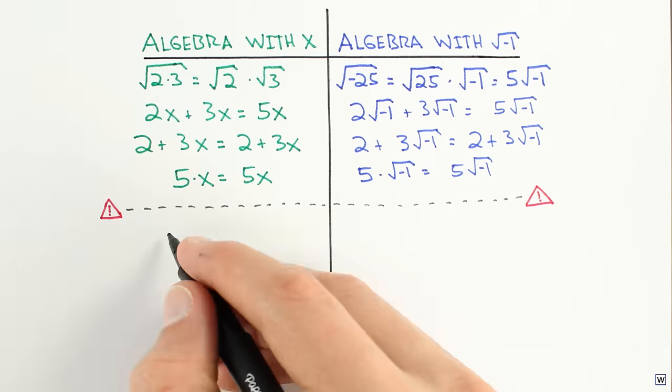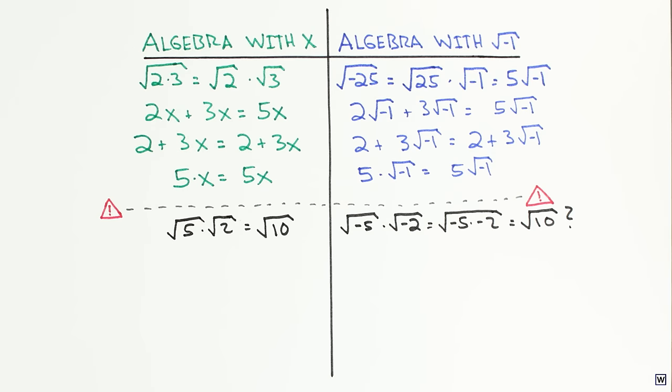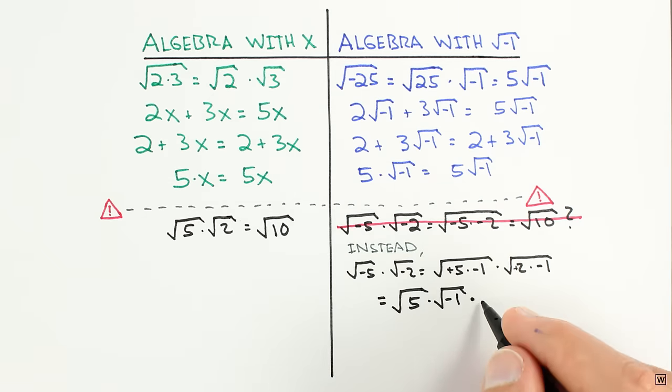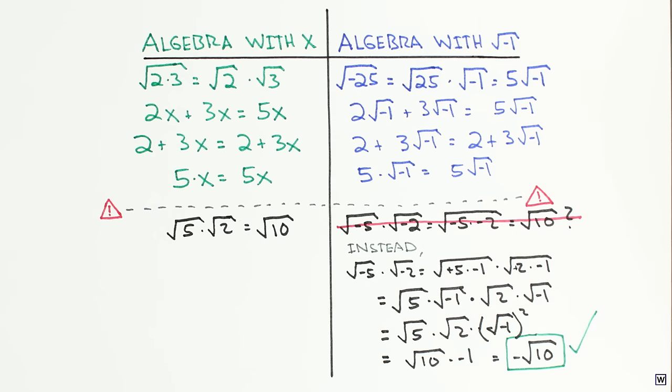Now there are some cases where our new numbers behave a little strangely, but these can often be avoided by first separating out the square root of minus 1. Now that we have a grasp on how our new numbers work, we can see how they fixed one of our problems from last time.